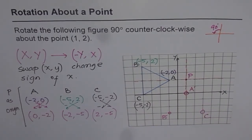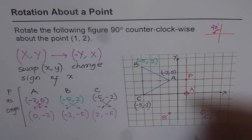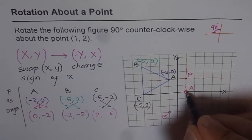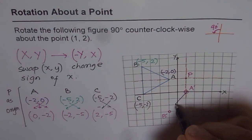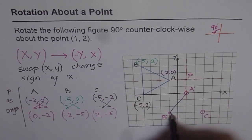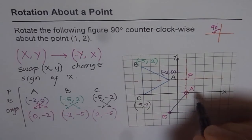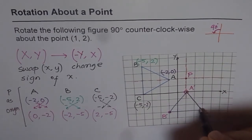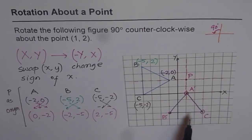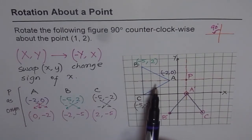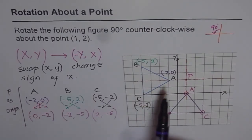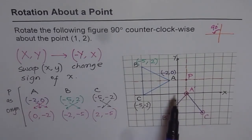Now we can join the new points to get the answer. Joining A' to B', B' to C', and A' to C' gives us the rotated triangle. That is how we rotate a given figure around any point apart from the origin.